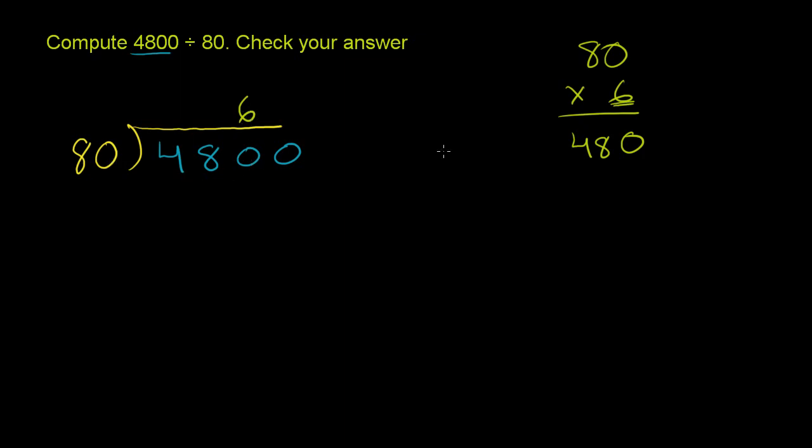Now, 6 times 80 is, we already saw, 480. And then we can subtract, and we get 0. And we bring down another 0. 80 goes into 0 how many times? Well, it goes into it 0 times. 0 times 80 is 0. You subtract, you get 0's. And there's nothing left to bring down, so we're done. 4,800 divided by 80 is 60.